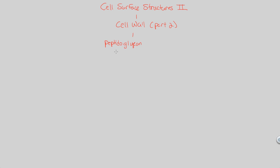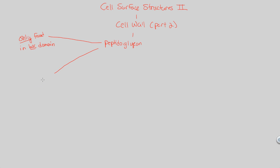Those things should already be ringing in your head from Bio 1. So what is peptidoglycan? Before getting into that, let's mention a couple of key points. Peptidoglycan is actually only found in the bacterial domain - not found in the archaea domain, and not found in our eukaryotic cells. That's our first important note. Peptidoglycan is a two-part structure that is actually a polymer - a polymeric structure.